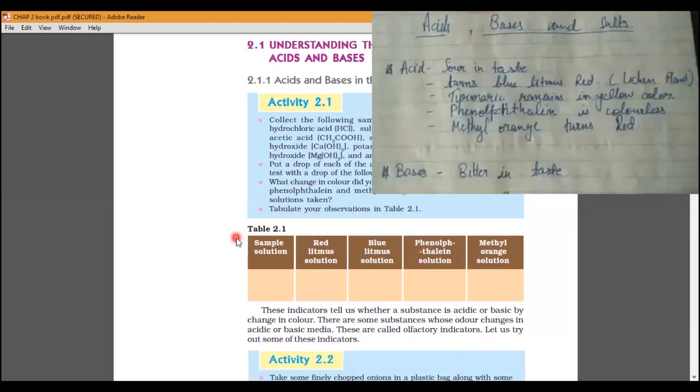Let's go. Let's see. Acid is sour in taste. Litmus paper is red. Turmeric is yellow. If it is yellow, it is yellow. If we add it in the Acid.